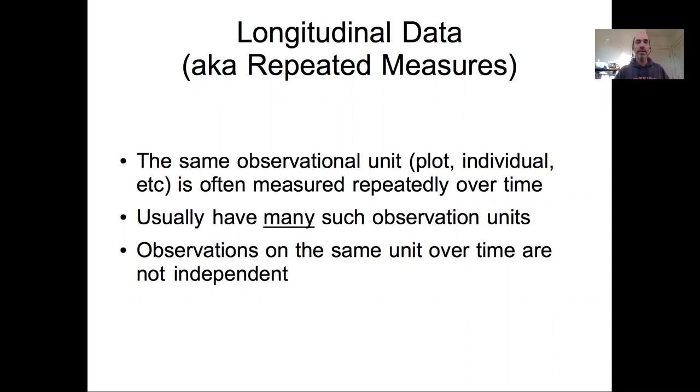Repeated measures data is very common in monitoring, where you are measuring the same plot, the same individual, the same monitoring station, the same gauge, and you're monitoring that over time, but you have many places that you're monitoring. When you do that, observations on the same unit over time are not independent. You can't pool data sets that measure individuals over time and treat them as independent samples. You're going to vastly over-inflate your sample size because measurements through time are not independent. The effective sample size is somewhere between the number of individuals you have and the number of individuals times measurements, and where you fall in that continuum has a lot to do with the autocorrelation in the data.